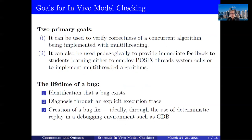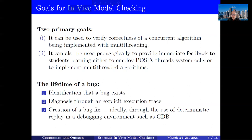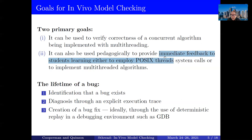There are two primary goals here. First, it can be used to verify correctness of a concurrent algorithm, specifically in an in vivo setting — that is what is novel here. Whatever that might entail in terms of remote access and remote resources. Second, we can use this pedagogically to provide immediate feedback to students learning to employ POSIX thread system calls or multi-threaded algorithms.